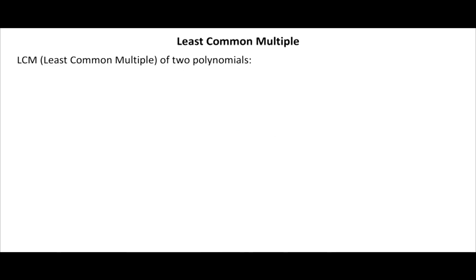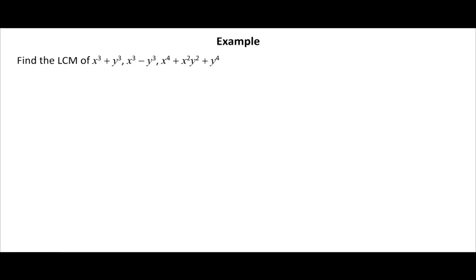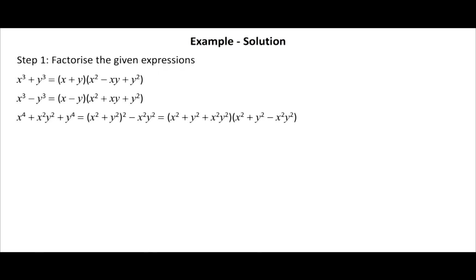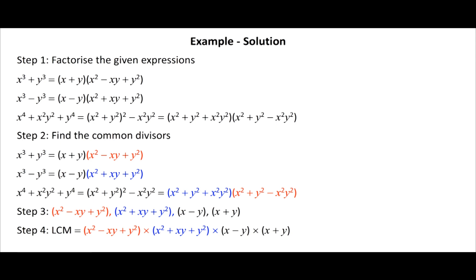The LCM (least common multiple) of two polynomials: m(x) is said to be the LCM of f(x) and g(x) if it is a common multiple and has the least degree among all common multiples. To find LCM using factorization: Step 1 — factorize the polynomials using formulae. Step 2 — choose common factors. Step 3 — write all factors of all expressions, but write common factors only once. Step 4 — the LCM is the product of such factors.